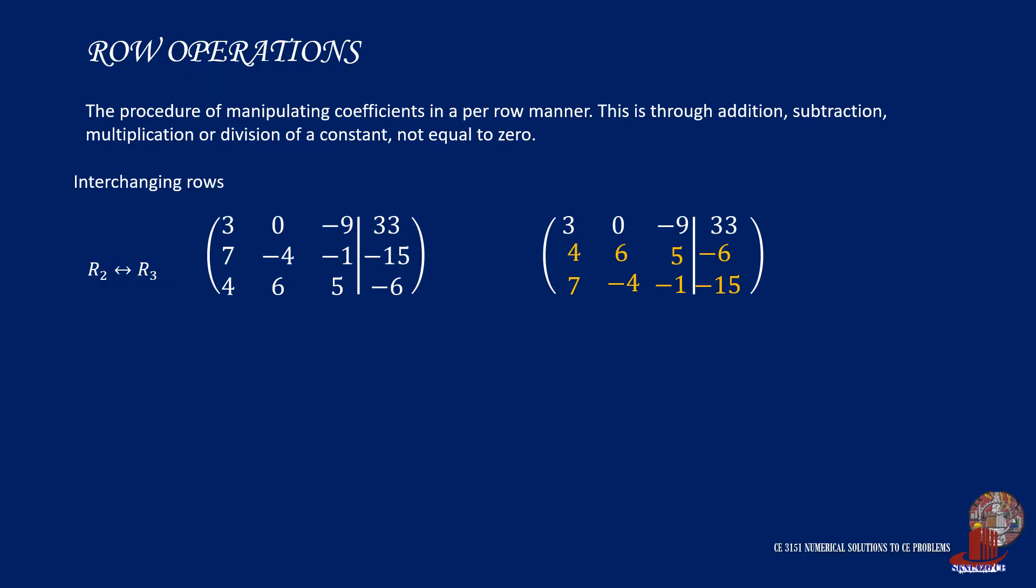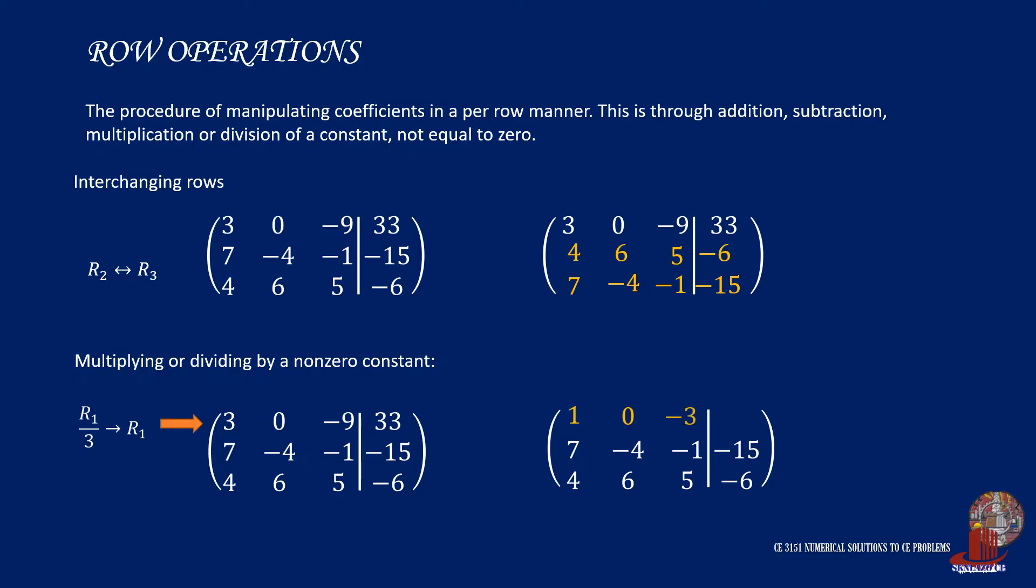The second row operation is by multiplying or dividing a non-zero constant. From the same example, we can reduce the elements in row 1 by dividing them by 3. Or in equation, we say row 1 divided by 3 is the updated row 1, and the elements become 1, 0, negative 3, and 11.